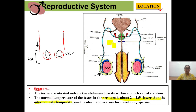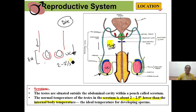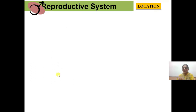If sperm were formed inside the body, they would die — they would not be able to survive at the body's high temperature. That is why this reproductive organ is pushed slightly outside the abdomen. The temperature there is 2 to 2.5 degrees lower than the main body temperature, and this is the ideal temperature for the formation of sperm — that is, for spermatogenesis.